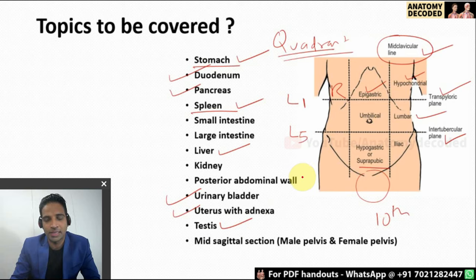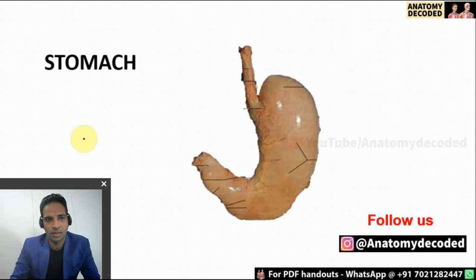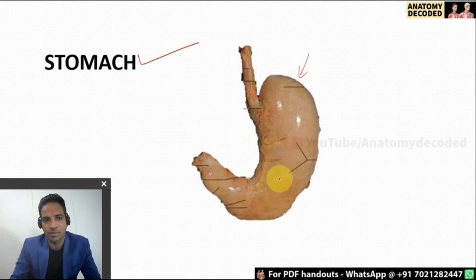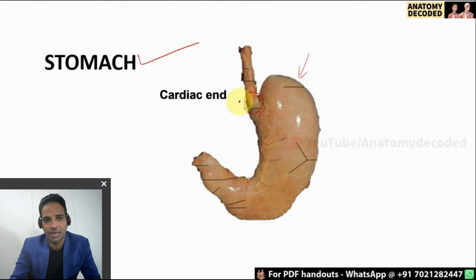With this basic idea, let us begin with the discussion of the individual organs, starting with the stomach. Here we can see the specimen of the stomach. For holding the stomach in anatomical position, it has to be held in the left hand such that the palm goes on the posterior surface. The two surfaces of the stomach are the anterosuperior surface and posteroinferior surface. The ends are the cardiac end and the pyloric end of the stomach.